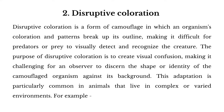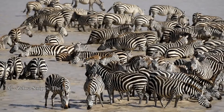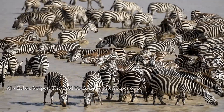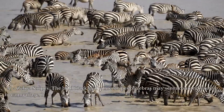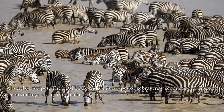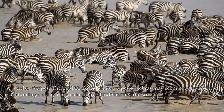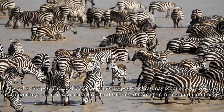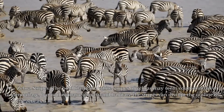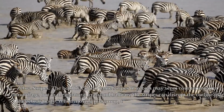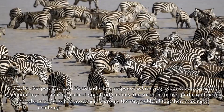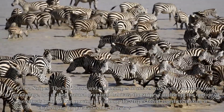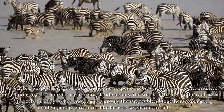For example, a. Zebra stripes. The bold black and white stripes of zebras may seem counterintuitive to camouflage, but in their natural grassland habitats, the stripes can disrupt the outline of the zebra's body. When moving in a group, the stripes blend together, making it challenging for predators like lions to single out an individual.